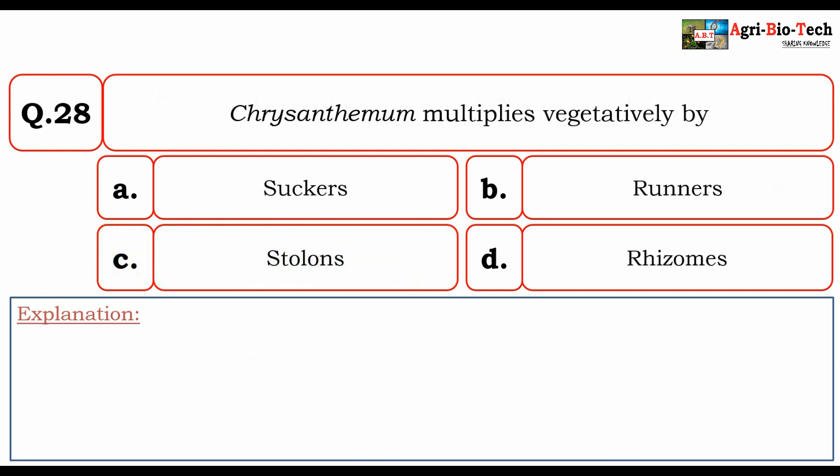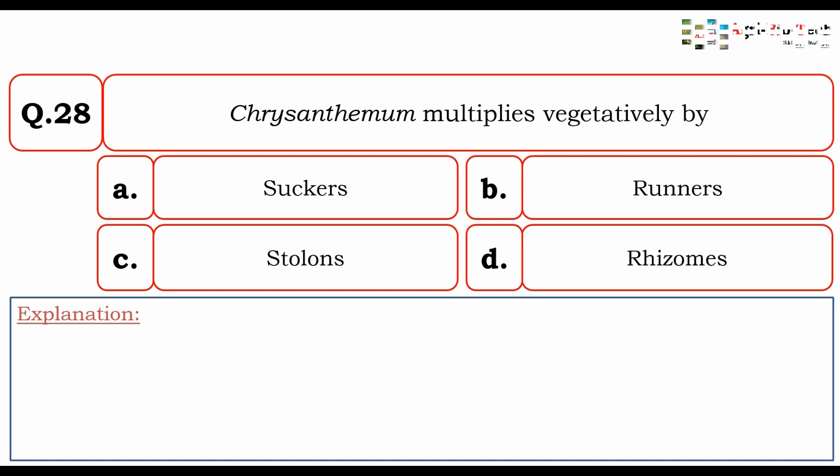Chrysanthemum multiplies vegetatively by: A. suckers, B. runners, C. stolons, D. rhizomes. The correct option is A. suckers.